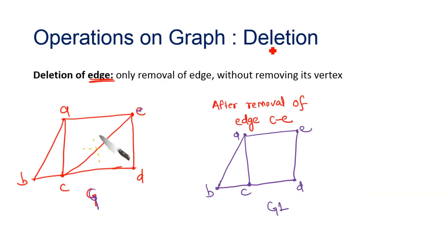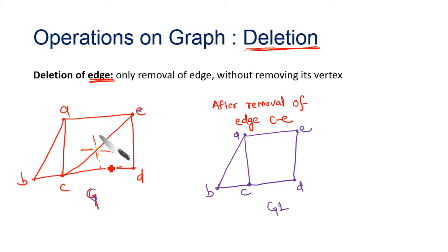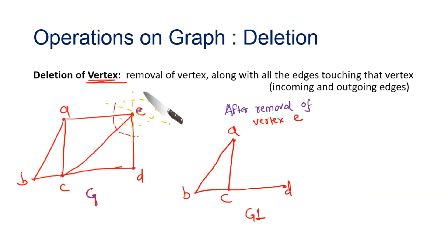The last operation is deletion. When performing deletion, we can either delete an edge or a vertex. If we want to delete an edge, we only remove the edge without removing its vertices. So I will just delete that particular edge and still maintain the vertices in the graph. After removal of this edge, the graph looks like this.